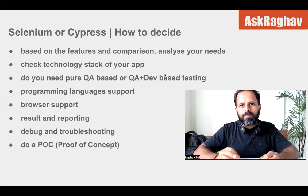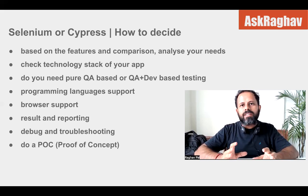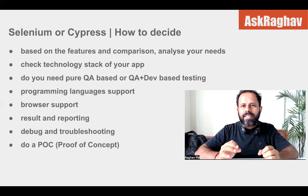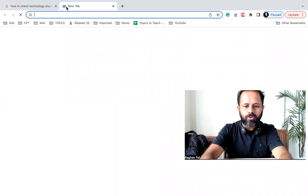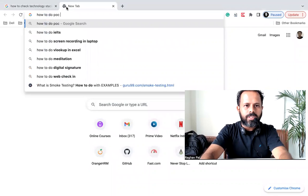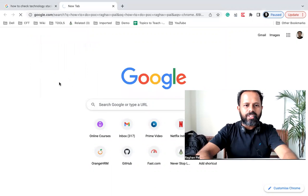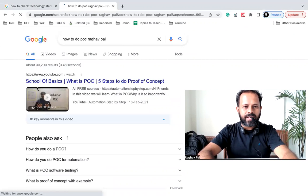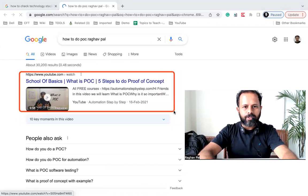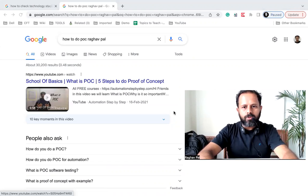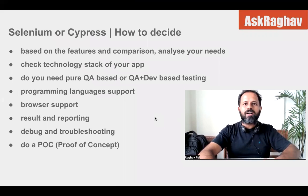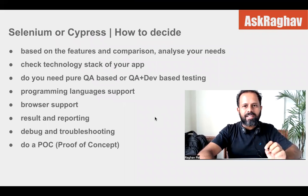You should always do a POC — proof of concept. After deciding which tool is better for you, try to automate a simple scenario that covers most of your features, and then you will have very good confidence in that tool. I have a video on how to do a POC — five steps to do POC — and I will add the link in the description. You can check that and then decide which one to go with.